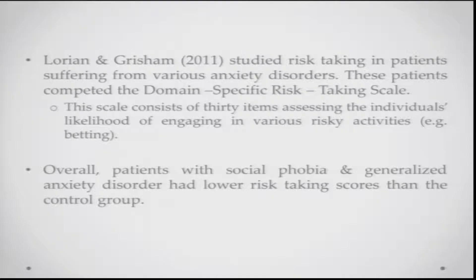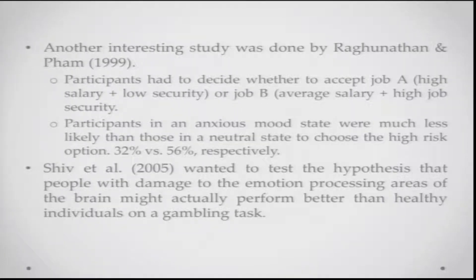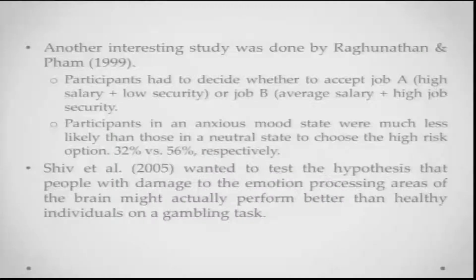Lorien and Grisham in 2011 studied risk taking in patients with various anxiety disorders using a domain-specific risk taking scale of about 30 items assessing the likelihood of engaging in risky activities. Overall, patients with social phobia and generalized anxiety disorder had much lower risk taking scores than the control group. In a further study, Raghunathan and Pham in 1999 asked participants to decide between Job A — high salary but low job security — and Job B — average salary but very high job security.